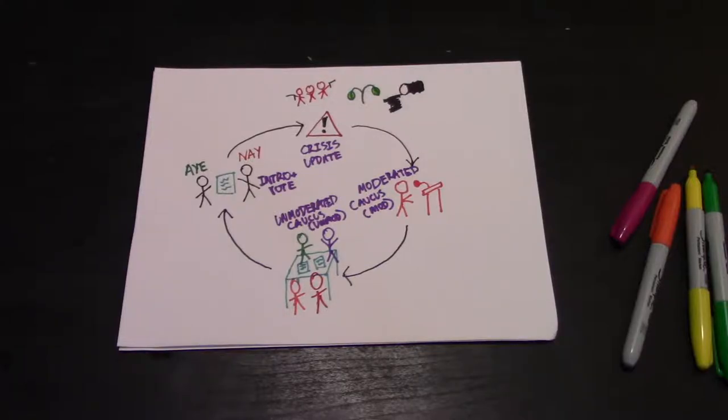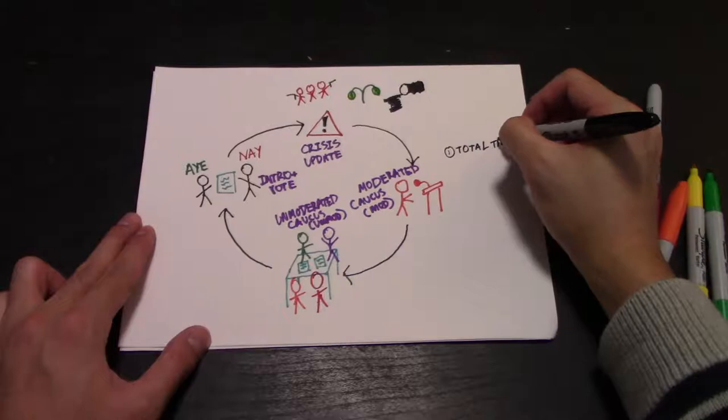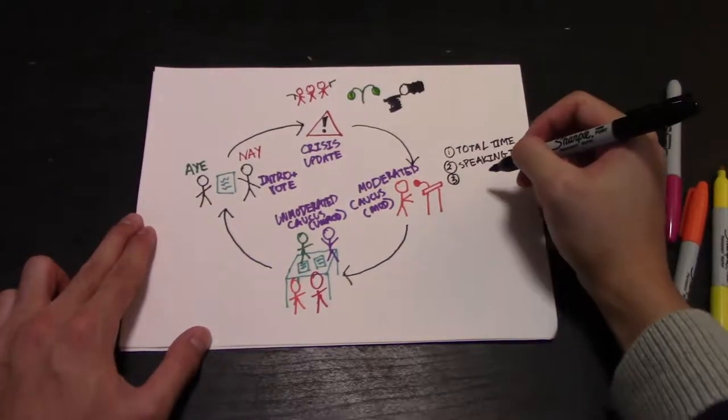A moderated caucus is a series of speeches given by your fellow delegates. To propose a moderated caucus you need to do three things: give the total time of the mod, the speaking time of each delegate, and the topic.